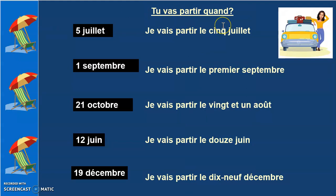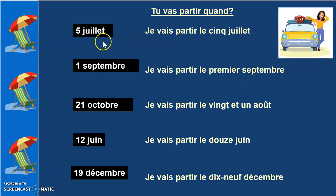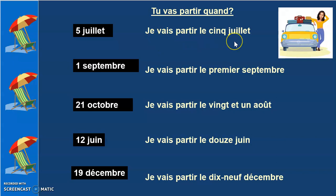Tu vas partir quand? — When are you leaving, or when are you going to leave? For such a question, your answer would be the number and month. For example, if it is 5 juillet, you would say Je vais partir le 5 juillet — I am going to leave on the 5th of July.